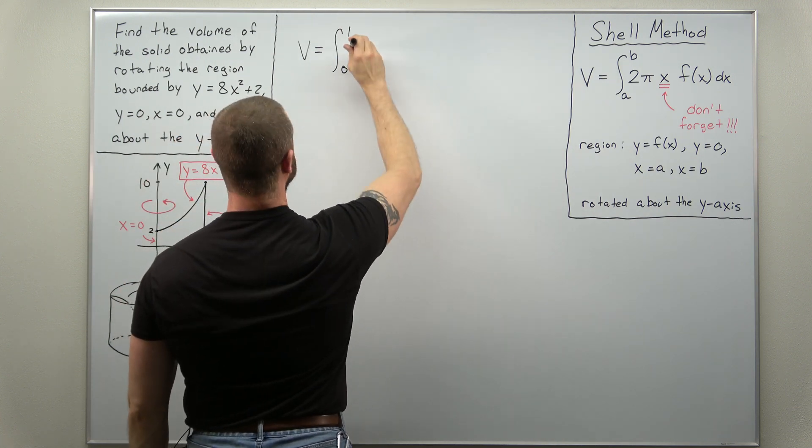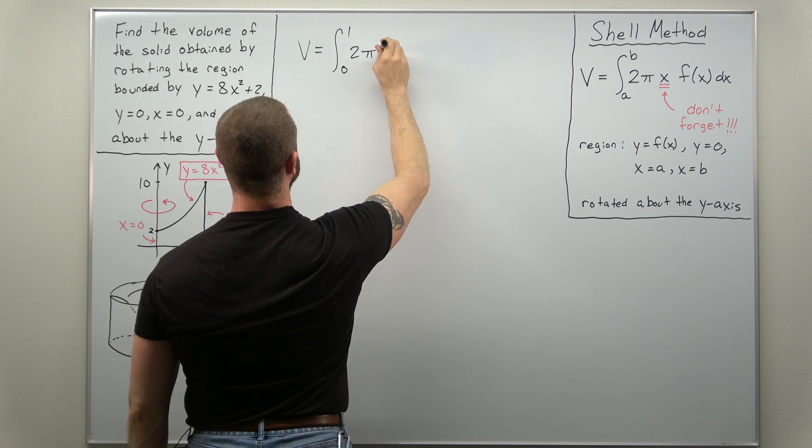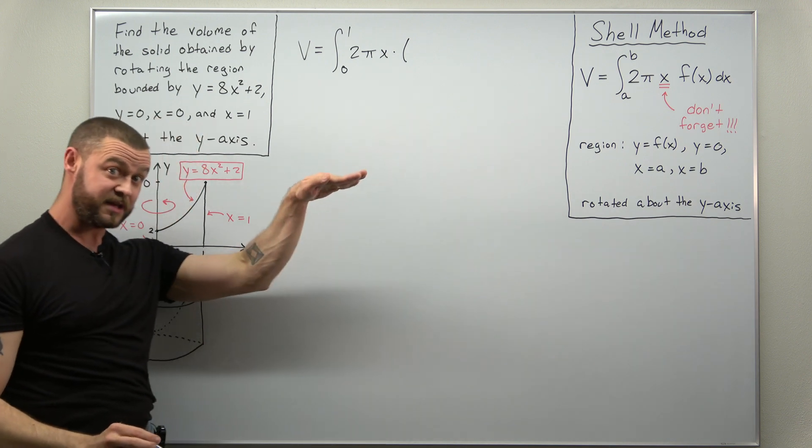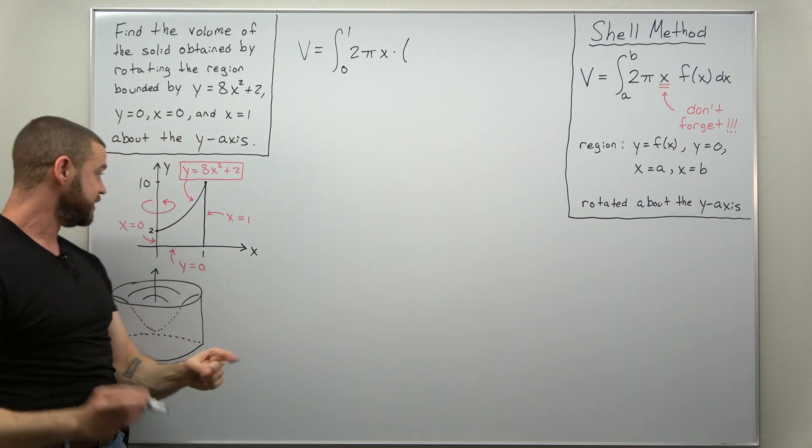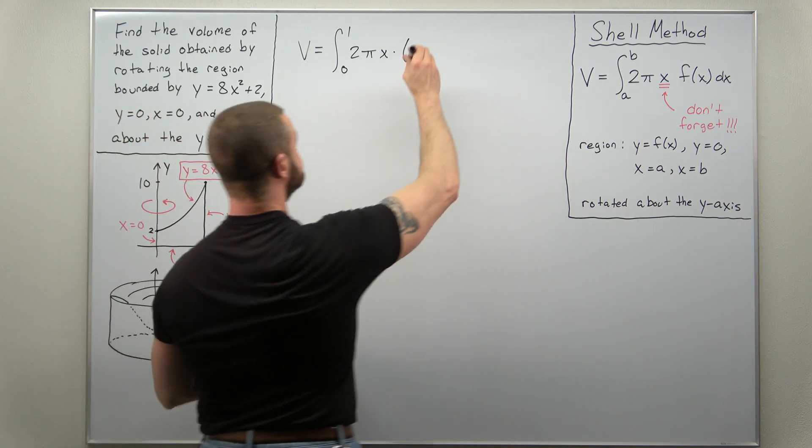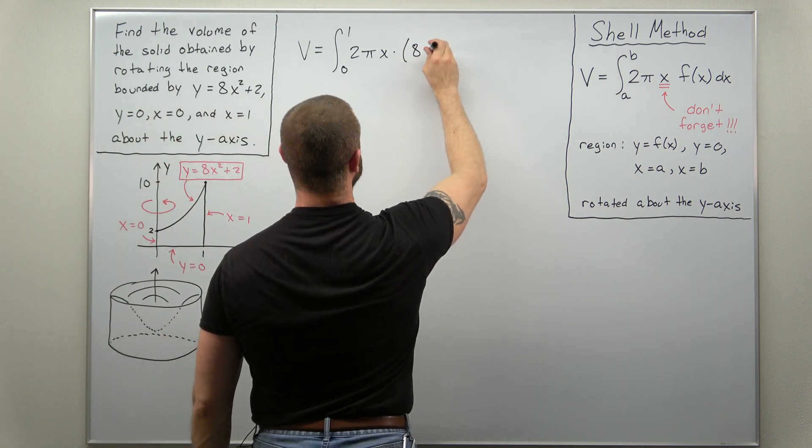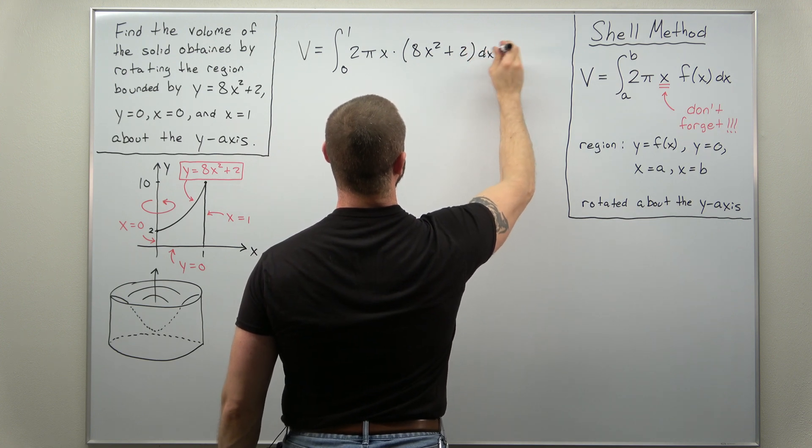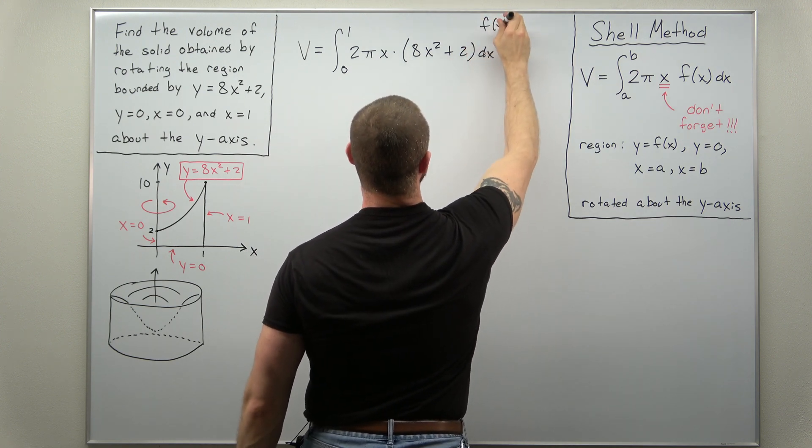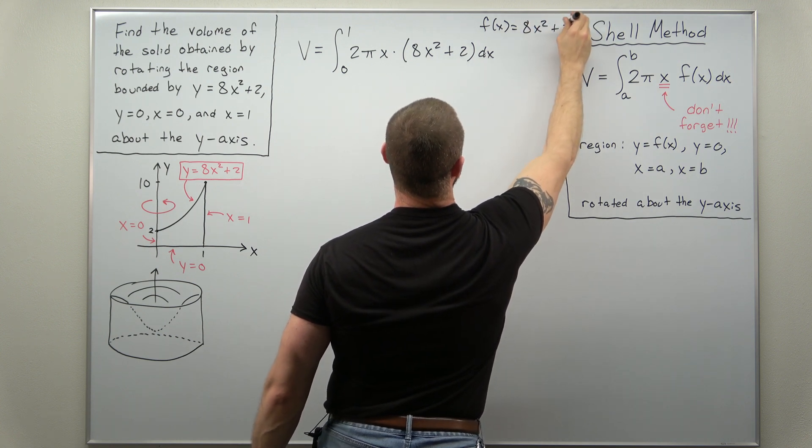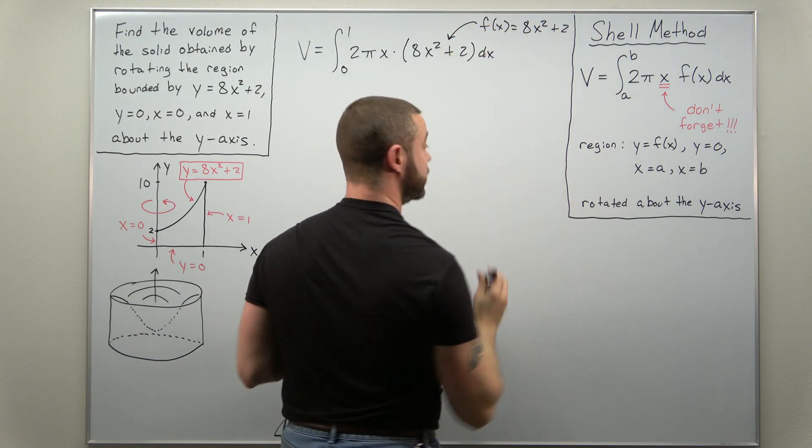We have a factor of 2 pi x and that is multiplying the function, basically the function on the top of that region 8x squared plus 2. So we'll put that in parentheses indicating that is the function of x, f of x, in that formula. And we're just basically plugging that in.